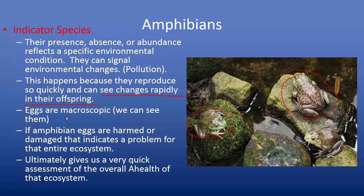Another benefit is that amphibian eggs are macroscopic, meaning we can see them with the naked eye — we don't need a microscope. If amphibian eggs are harmed or damaged, this typically indicates a problem for the entire ecosystem. And as we saw in this example, it's not always just eggs or juveniles that show the problem — it can be sub-adults or adults as well. The key point to know about amphibians as indicator species is that they give us a very quick assessment of the overall health of that ecosystem. Make sure you star that.